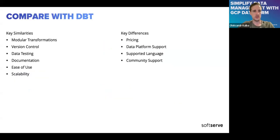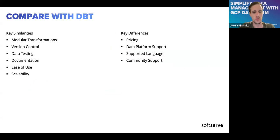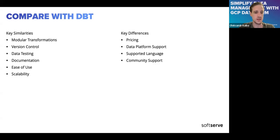Let's compare with dbt. The key similarities are modular transformations — both support dividing complex SQL scripts into models with defined dependencies. Version control: both support Git. Data testing: both support custom tests. Documentation: both support it. Ease of use: both simplify your workflow. Scalability: you can define a large number of models without problems in either tool.